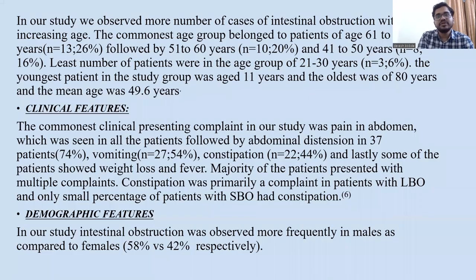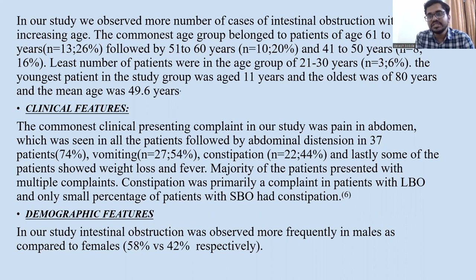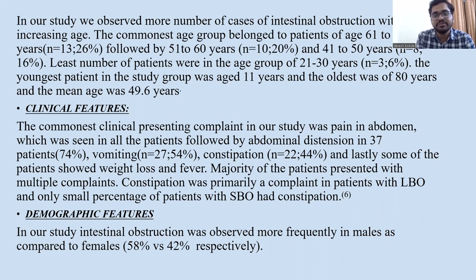In our study, we observed more number of cases of intestinal obstruction with increasing age. The commonest age group belonged to patients aged 61 to 70, followed by 51 to 60 years with 10 cases, and 41 to 50 years. The fewest patients were in the age group 21 to 30, amounting to 6% of total cases. The youngest patient was aged 11 years and the oldest was 80 years, with a mean age of 49.6 years.